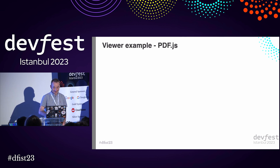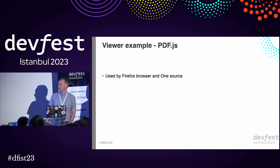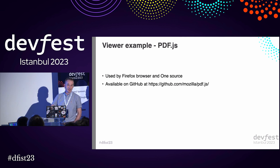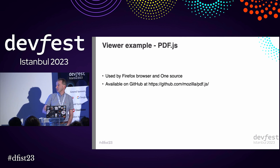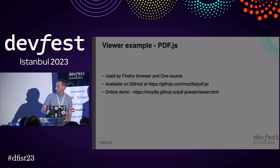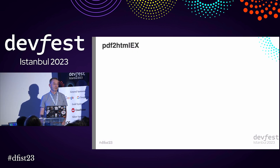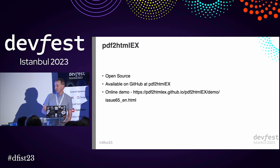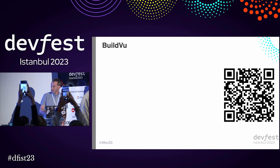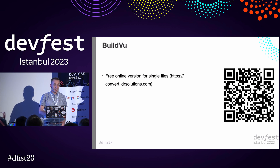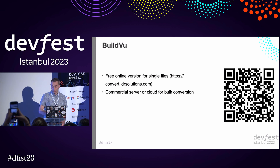I want to look at some examples now. If you just want a free viewer, PDF.js is what I'd recommend — it's brilliant, open source, on GitHub. Download it, it has an API you can build in. It doesn't generate the world's greatest code, but for most people that's not an issue. If you want to convert PDF to HTML5 on the server, the best open source tool is PDF to HTML — also open source and available on GitHub with an online demo. Our product is a commercial version — you can use it for free with a free online converter, that's the QR code. The commercial version we have is for bulk use.